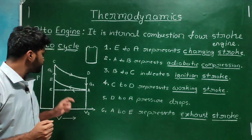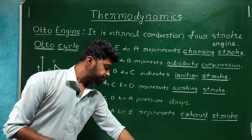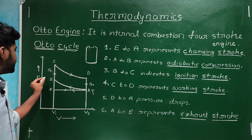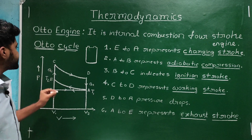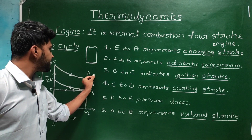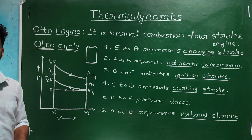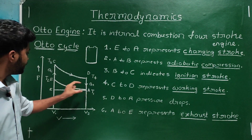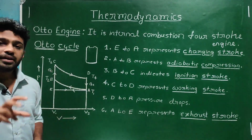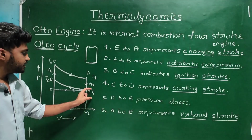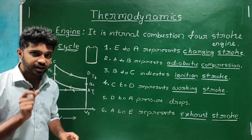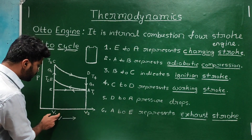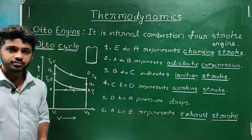In the Otto cycle graph, Q will denote heat and T will indicate temperature. There are four different temperatures: T1, T2, T3, and T4 at points A, B, C, and D respectively. V1 and V2 are two different volumes, where V1 is less than V2.